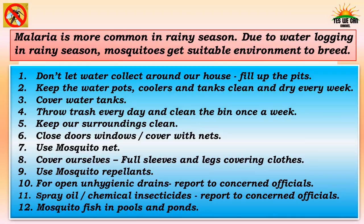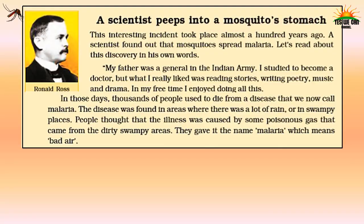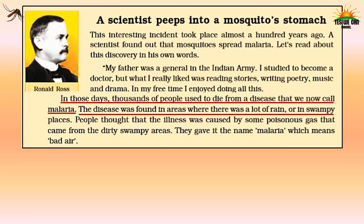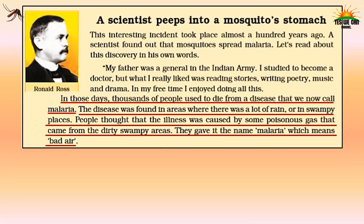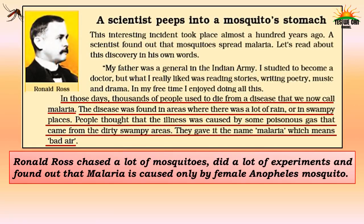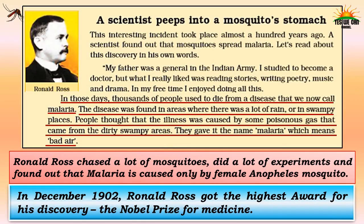A scientist peeps into a mosquito's stomach. This incident took place almost 100 years ago. In those days, thousands of people used to die from malaria, found in areas with a lot of rain or in swampy places. People thought the illness was caused by poisonous gas from dirty swampy areas and called it malaria, meaning bad air. Ronald Ross chased many mosquitoes, did experiments, and found that malaria is caused only by the female Anopheles mosquito. In December 1902, Ronald Ross received the Nobel Prize for Medicine for this discovery.